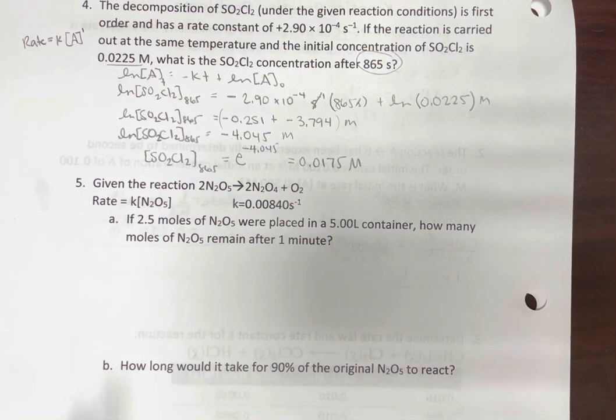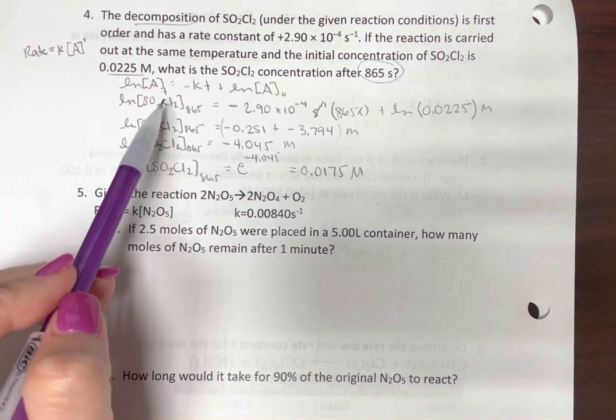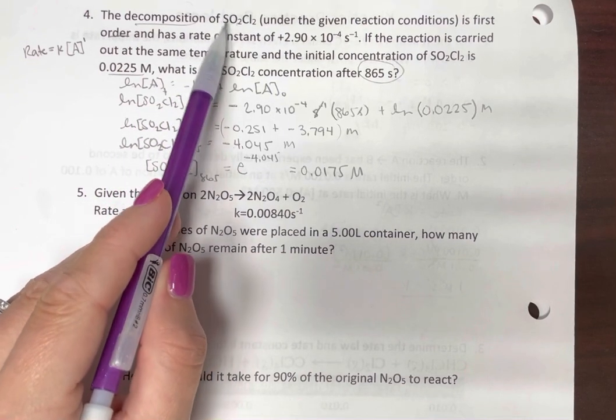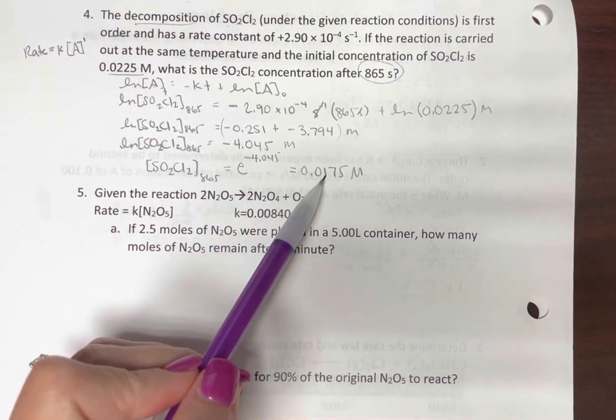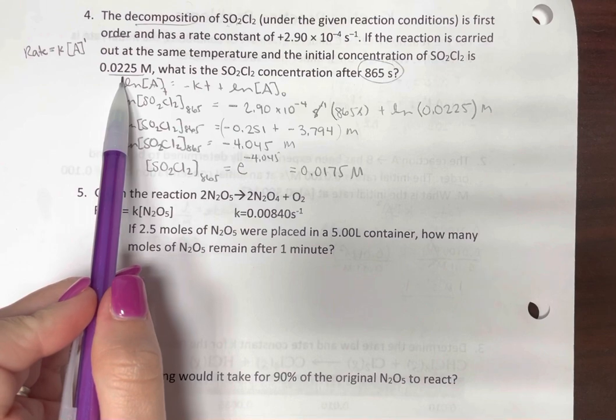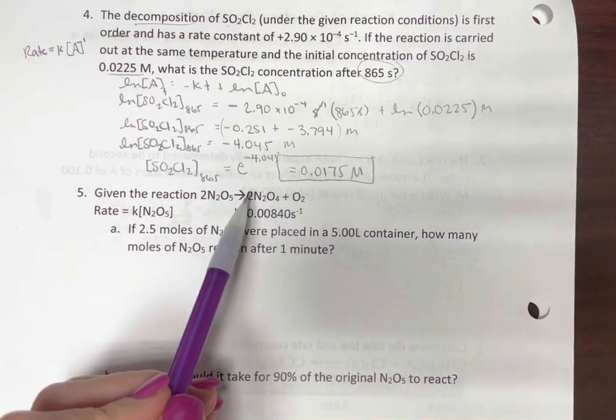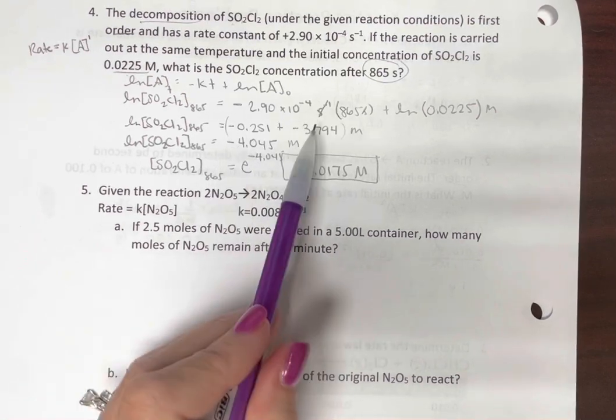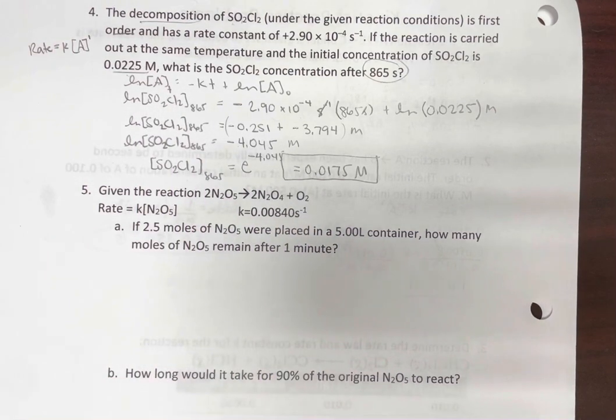Now, we need to make sure that as time progresses, this is a decomposition reaction. So our concentration of SO2Cl2 should be decreasing. So did we get a number that's less than what we started with? We did. So that's good. I've worked this problem before and forgotten the negative signs or added them wrong and gotten a number that's larger than what I started with. That's not possible.